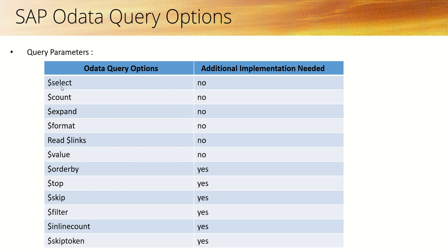What is the meaning of additional implementation? For example, if you want to use $select, we don't have to write any code logic based on that parameter value. But if you want to apply filter conditions, then we need to implement some logic in the respective method. Most parameters are used in entity sets. Some like $skip and $top are used in entity sets, and $expand is used for selecting parent-child together. So some parameters require implementation and some don't.